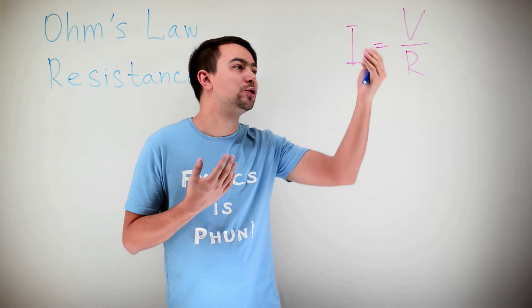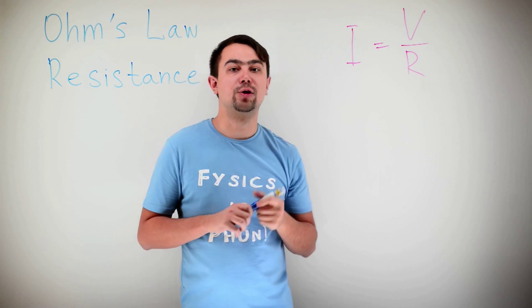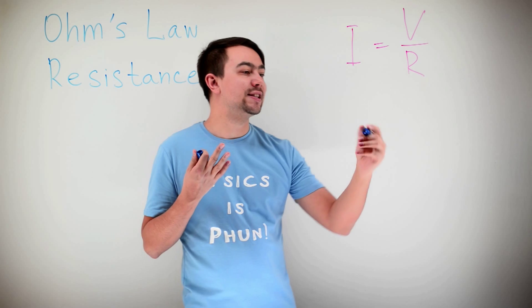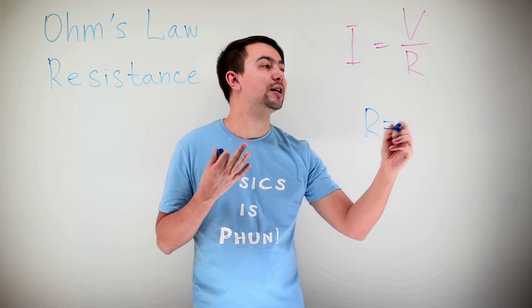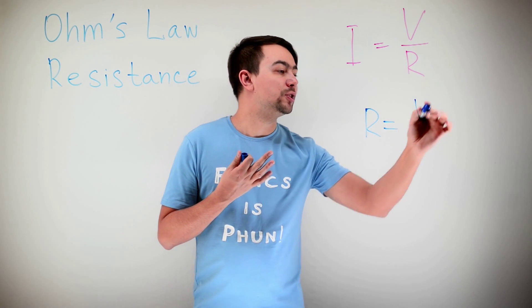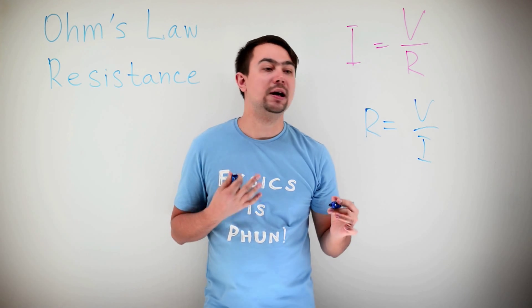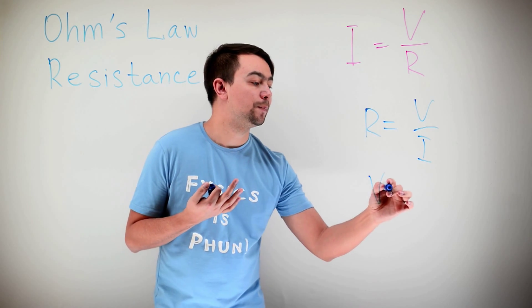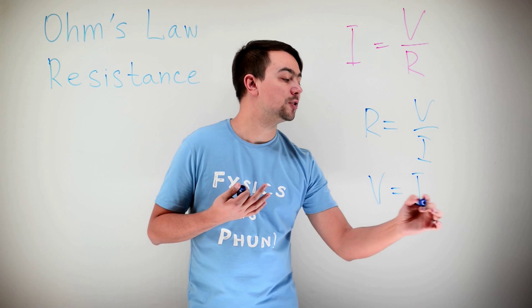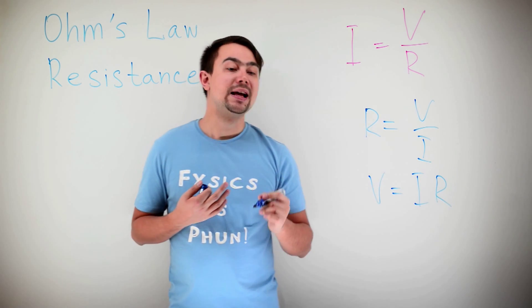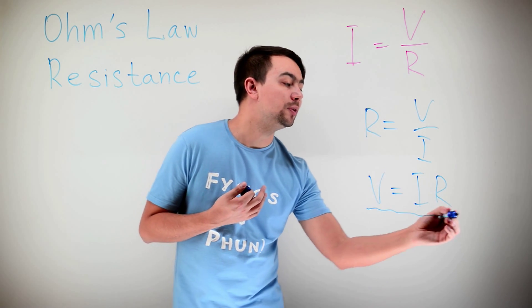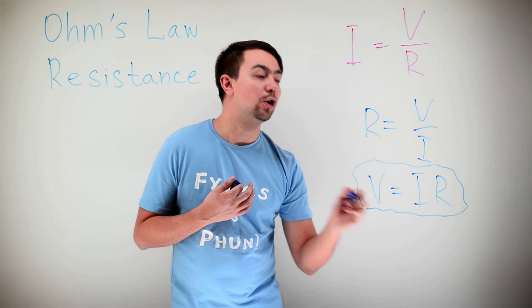Ohm's law allows rearrangement. So if you want to find the current, you use this formula. If you want to find the resistance, you rearrange it to get voltage divided by current. And of course, if you want voltage, you multiply current by resistance. I would say that this is the most commonly used formula for Ohm's law.